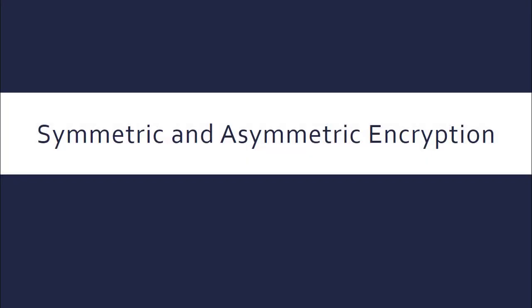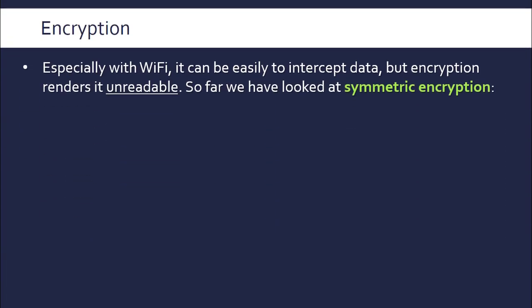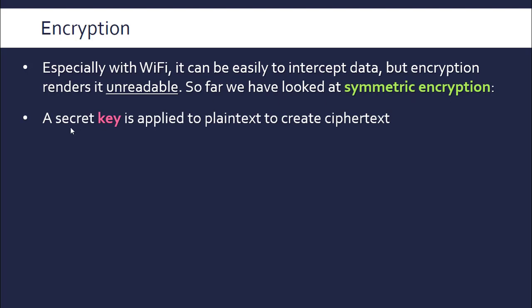We're looking at symmetric and asymmetric encryption — two methods, two processes to encrypt data. We've talked about the general concept of encryption before: it's generally quite easy to intercept data over networks, especially with so much wireless communication, but encryption makes data unreadable and only authorised viewers can decrypt and read it. In that basic example, we've actually already talked about symmetric encryption, where we have one secret key applied to the plain text to create the scrambled cipher text.